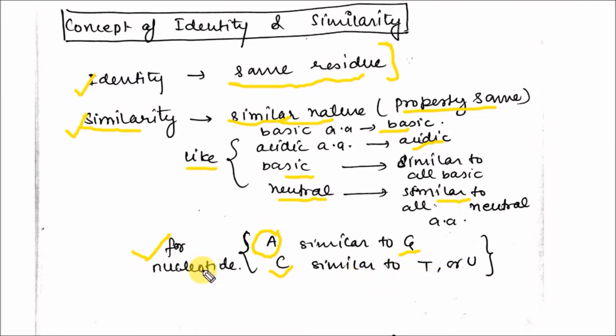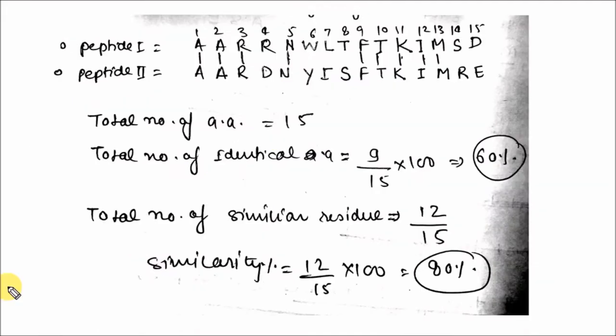You can understand the concept of identity and similarity by the following example. This is the example from the GATE biotechnology 2014 paper. You can see here peptide 1 sequence is given: alanine, alanine, arginine, asparagine, tryptophan, leucine, threonine, phenylalanine, threonine, lysine, isoleucine, methionine, serine, and aspartate.